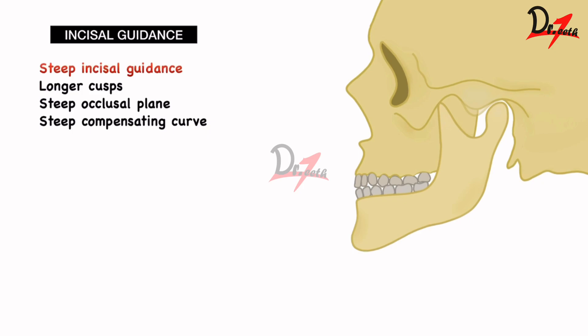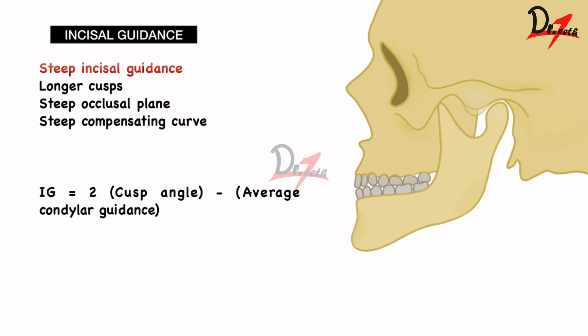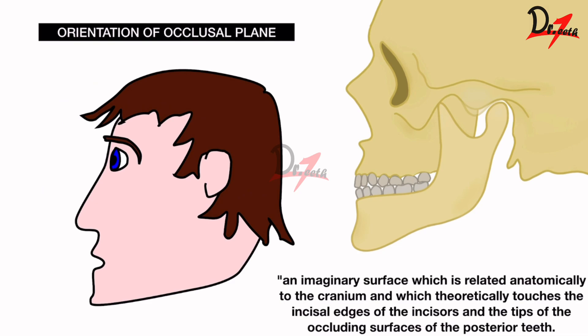When we have steep incisal guidance, we need longer cusps, a steeper occlusal plane, and steeper compensating curves — a combination of these helps achieve balance. By formula: incisal guidance = 2 × cusp height (twice the cusp angle) minus the average condylar guidance. This may be asked in a VIVA or MDS examination.